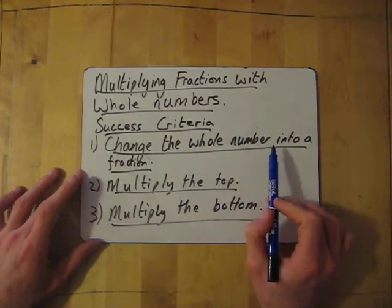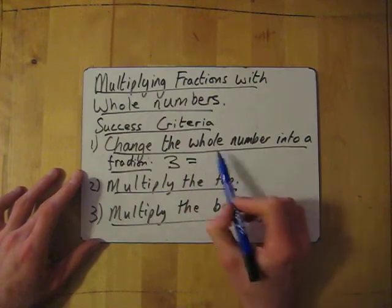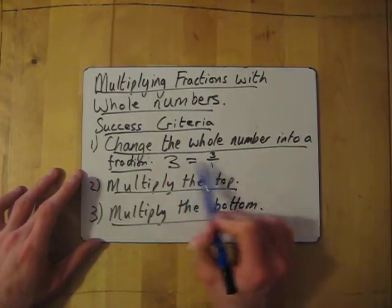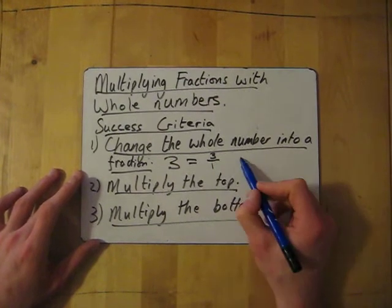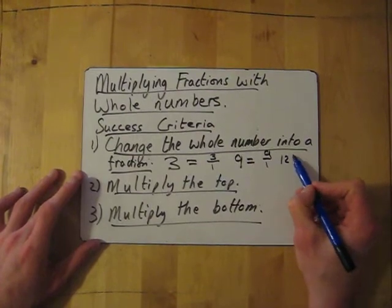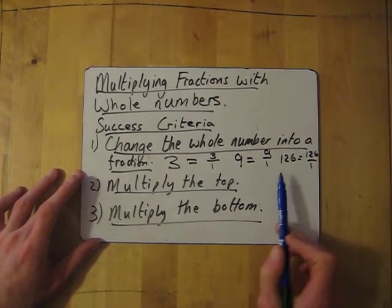So how do you turn a whole number into a fraction? If I had 3, all it is is 3 goes to the top part of the fraction over 1, and these two mean the same. If I had 9, it would equal 9 over 1. 126 would be 126 over 1. So that's how you change it into a fraction.